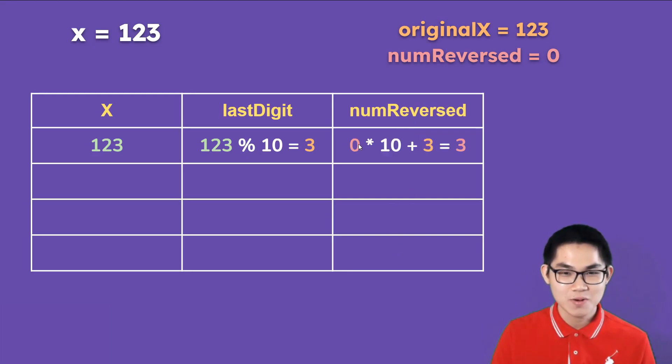So the formula is you get 0, which is right here. Num reverse is 0 times 10 plus the last digit 3, and that's going to give you 3. And then we get rid of the last digit. So we want to get rid of the number 3 in 123, so we floor divide by 10 and that's going to give us 12.